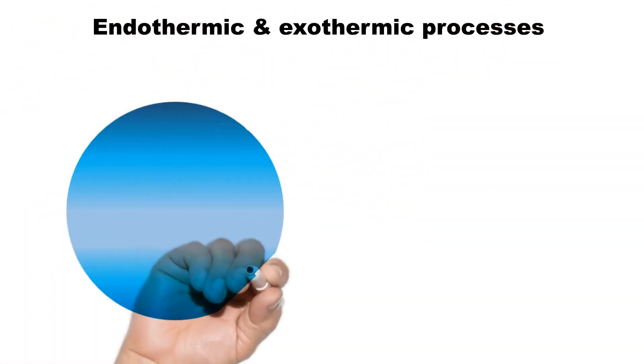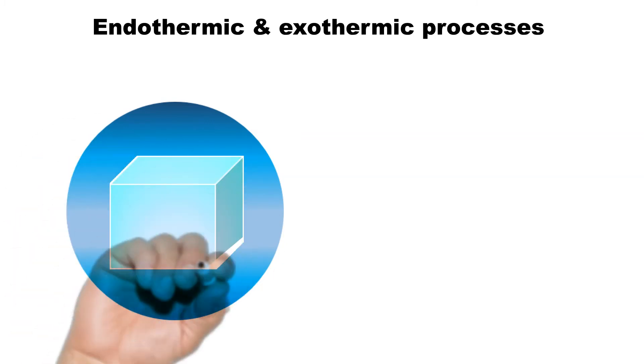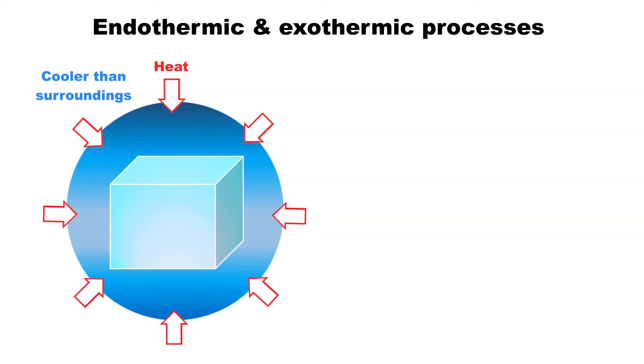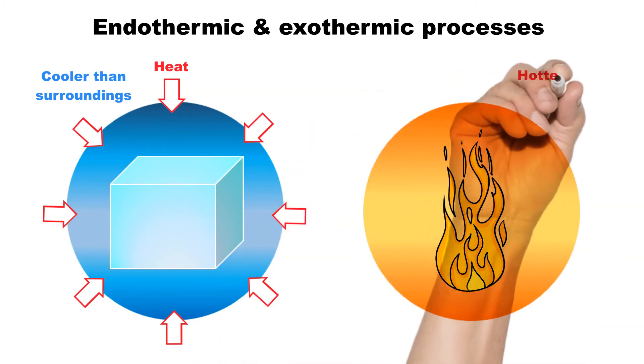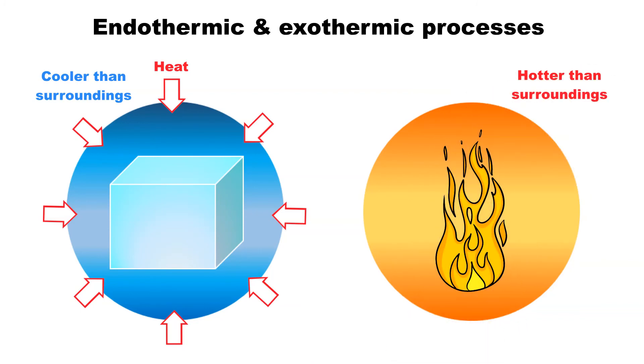An endothermic process is a process in which energy is consumed from its surroundings as heat. An example of an endothermic process is the vaporization of water. An exothermic process is a process that releases energy as heat into its surroundings. All combustion reactions are exothermic.